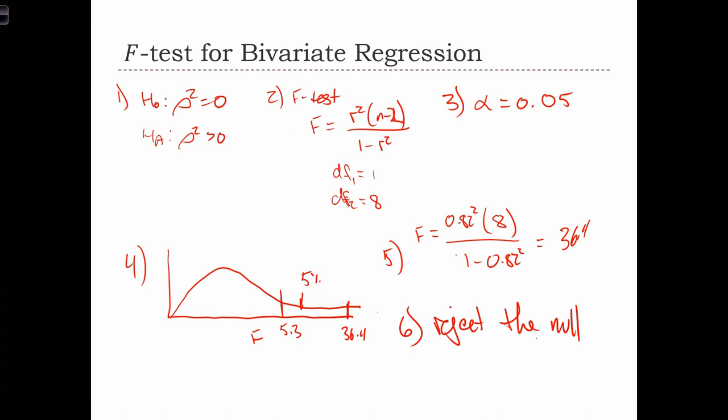So our assumption in the null hypothesis was that there's no relationship between the two variables. But based on our statistical test, we can reject that assumption. And instead, we can choose the alternative hypothesis that the number of alders is related to the amount of moisture in the ground.